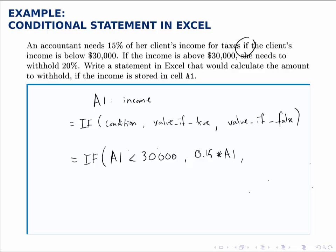If not, if the income is not below $30,000, in other words if it's above $30,000, we need to withhold 20%. So if this condition is false, the amount to withhold is 20% or 0.2 times the income.